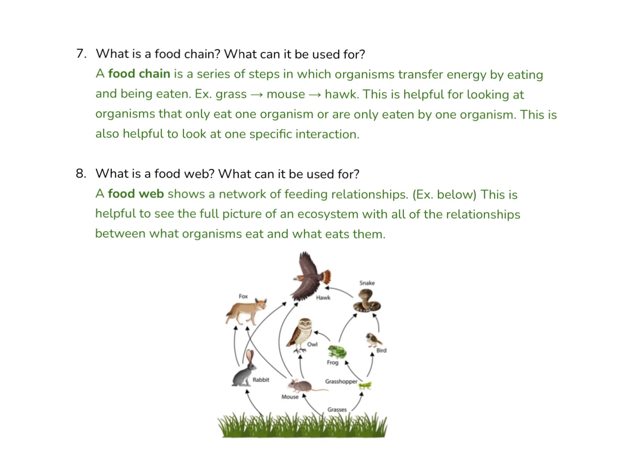What's even better than a food chain typically is a whole food web, which is question number 8, because it shows the full network of feeding relationships. We're seeing the entire ecosystem with all of the different relationships, because typically organisms don't just eat one source of food. They might eat a few things and they may have a few different predators, so it gives you a more detailed picture of what that ecosystem is like.